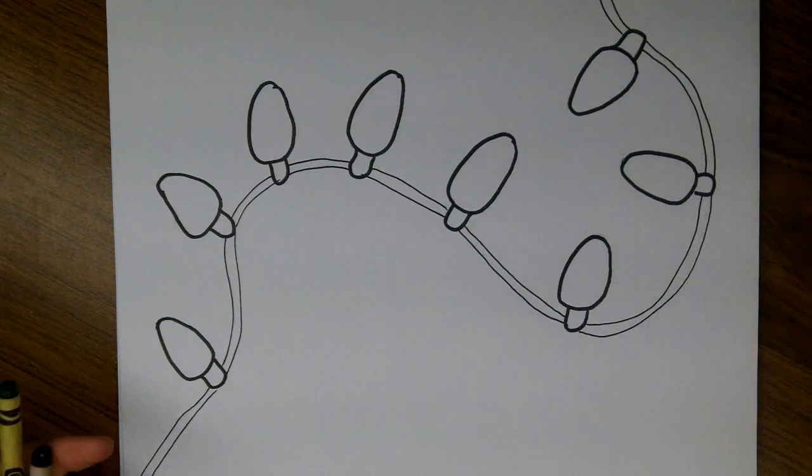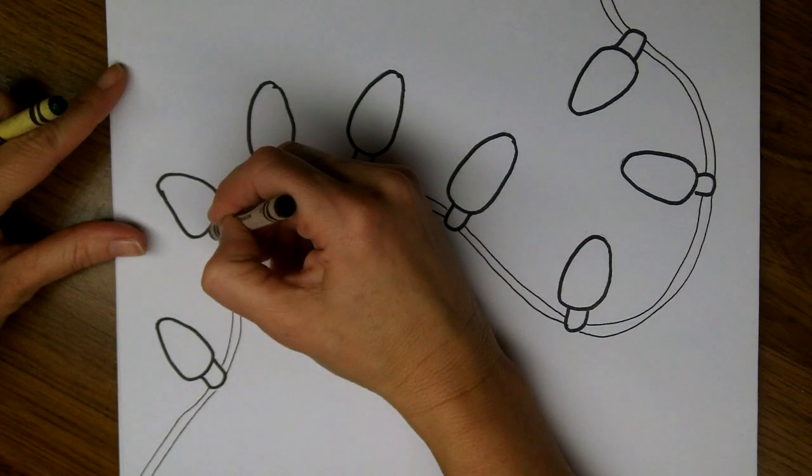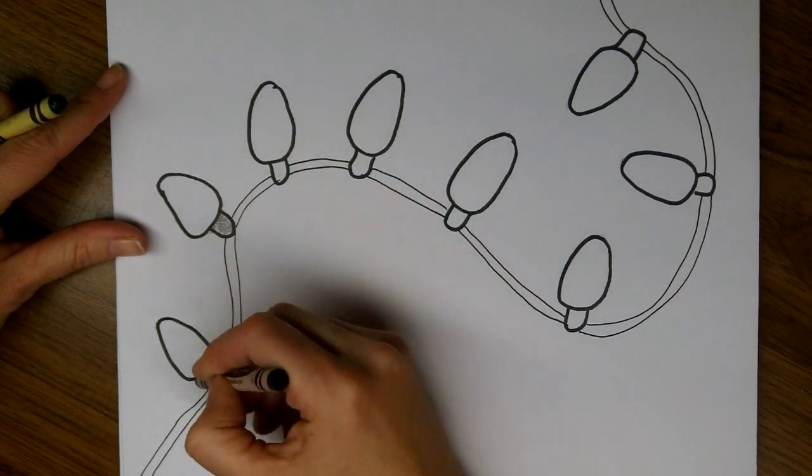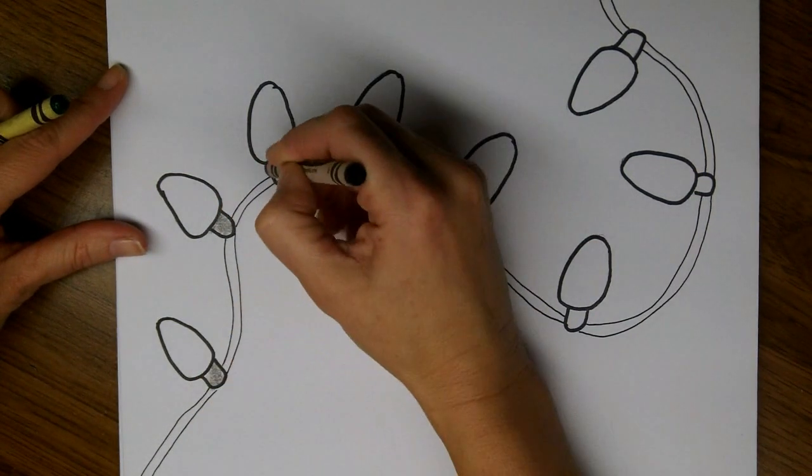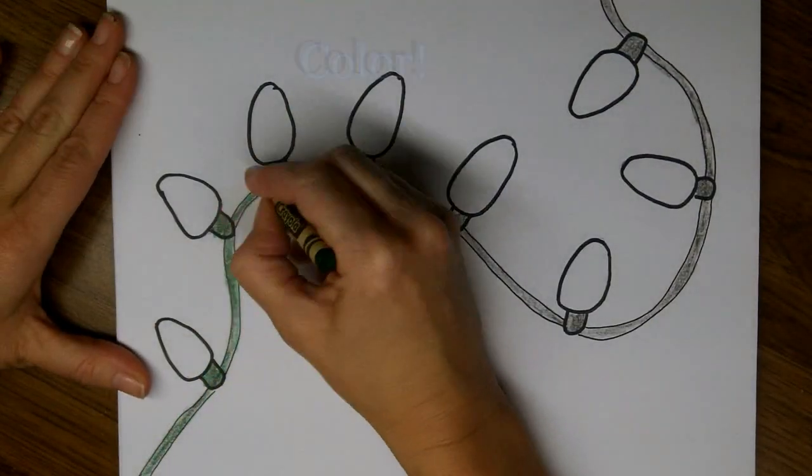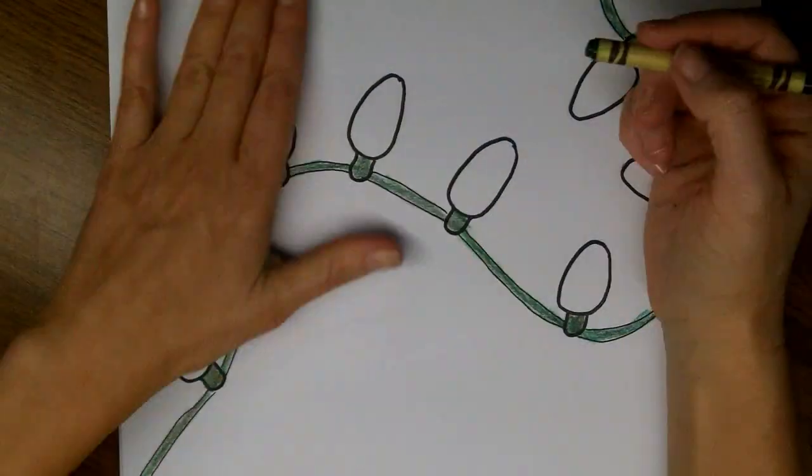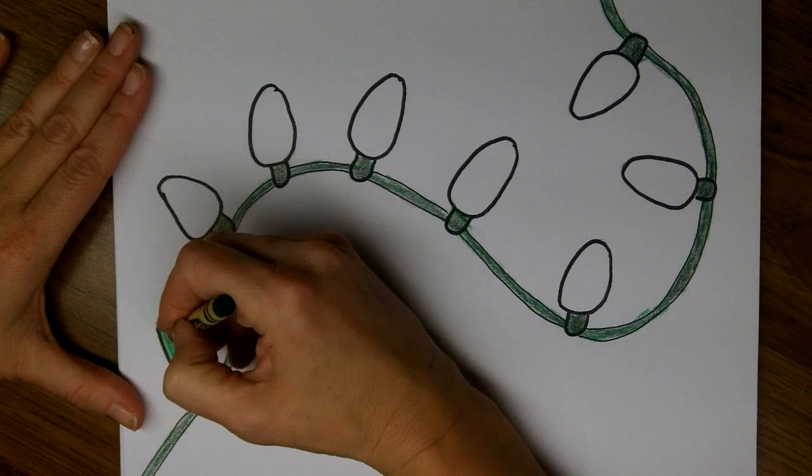Now we can color. I'm going to start off by shading my wire with a black crayon, and I'm going to do the connectors the same color because they're all made of the same material. And then I'm going to go over this again with my green crayon. The black behind it just gives it a darker look.